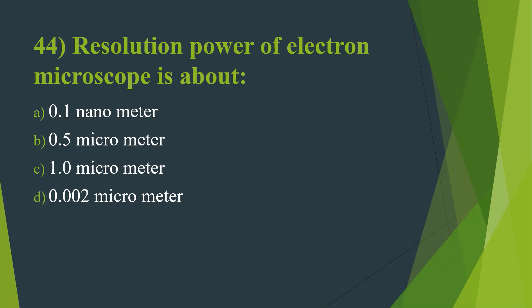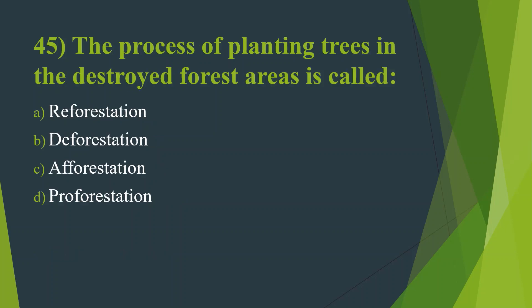Forty-fourth question: Resolution power of electron microscope is about — Option A, 0.1 nanometer. Option B, 0.5 micrometer. Option C, 1 micrometer. Option D, 0.002 micrometer. Answer is Option A, 0.1 nanometer.